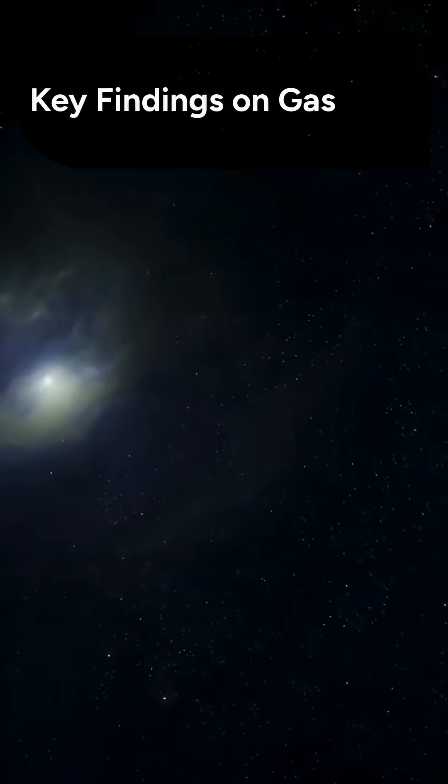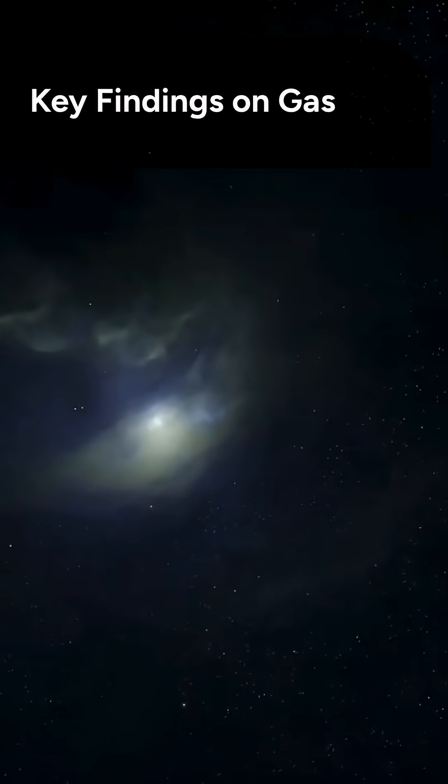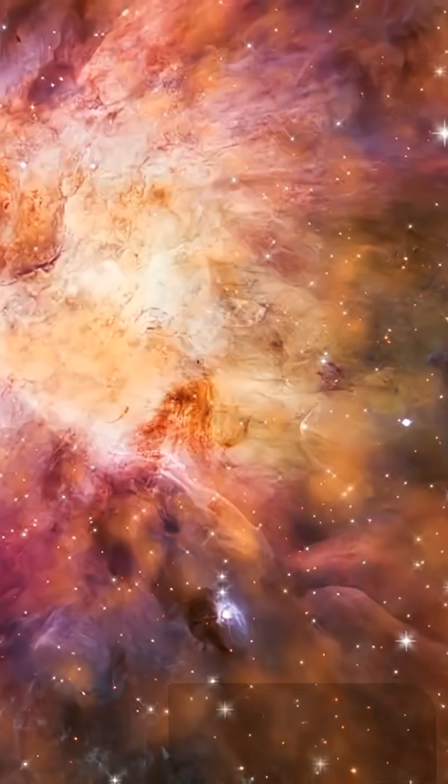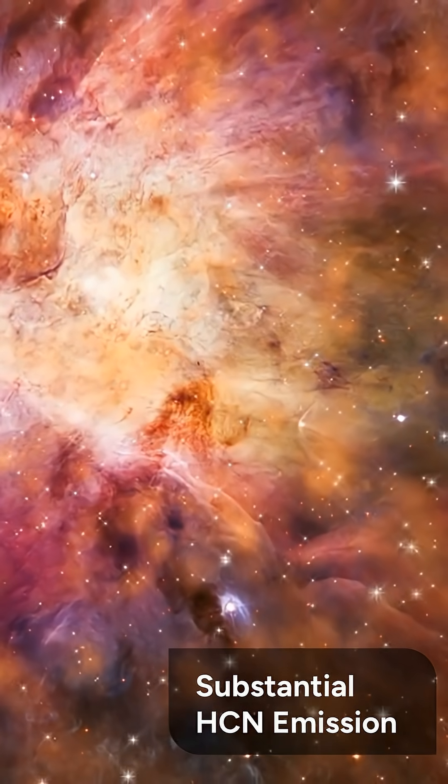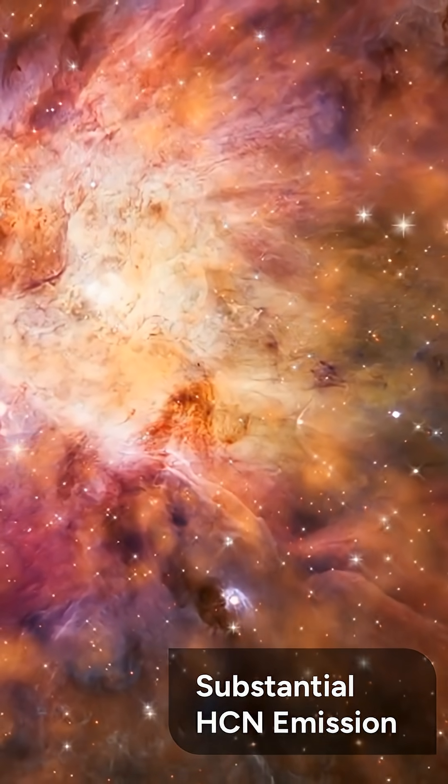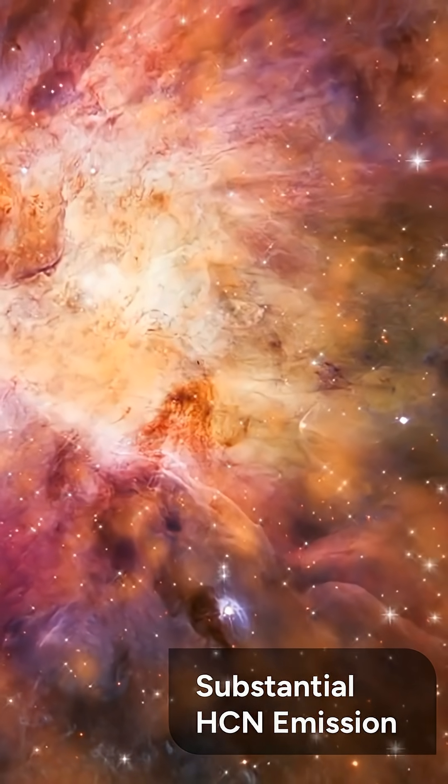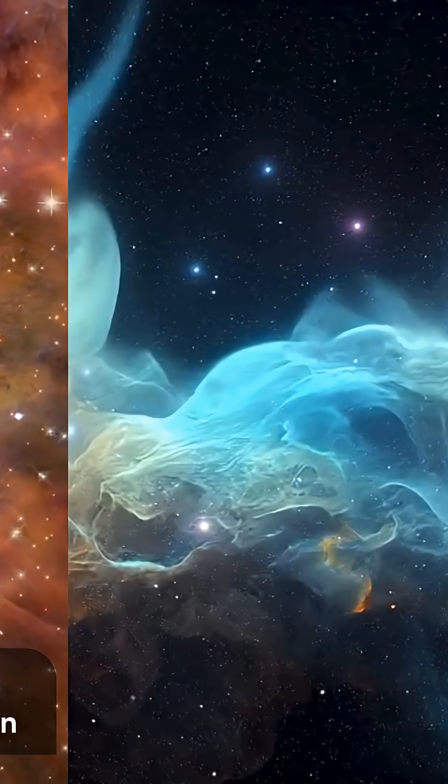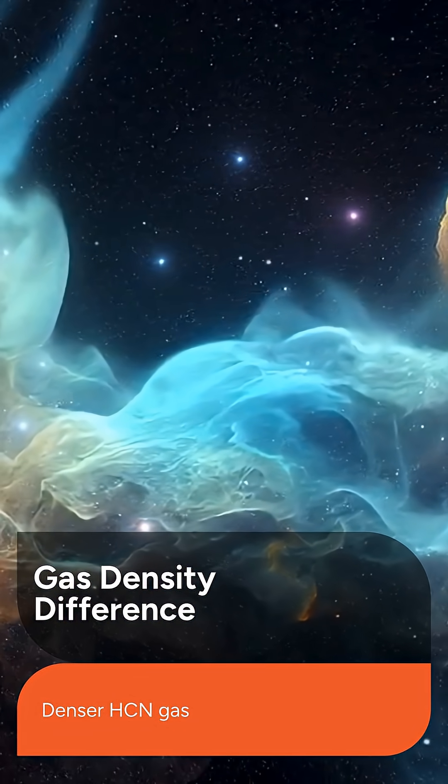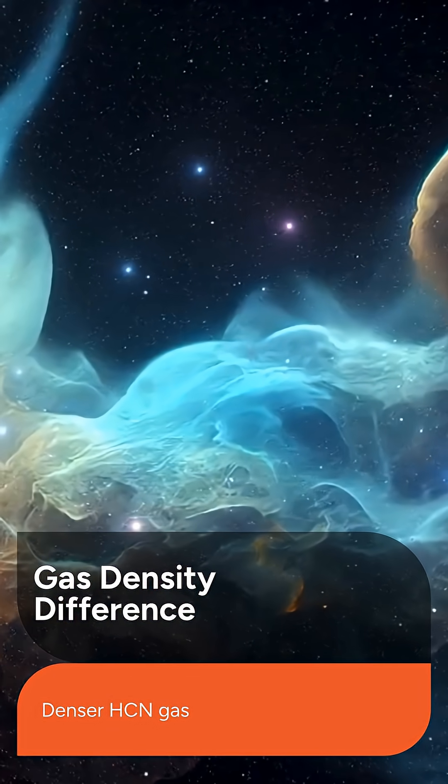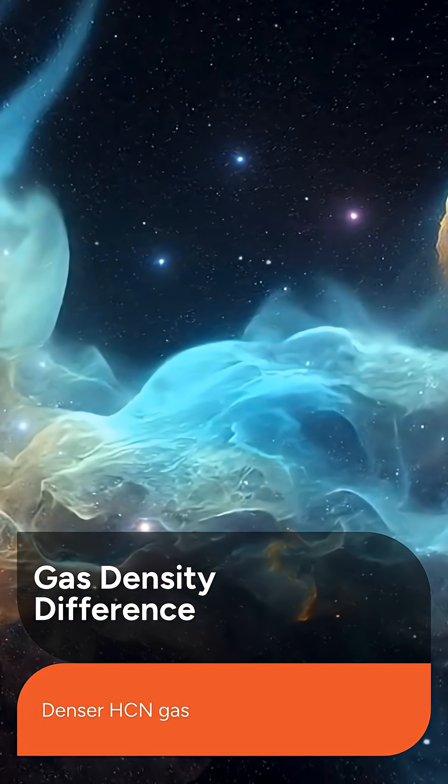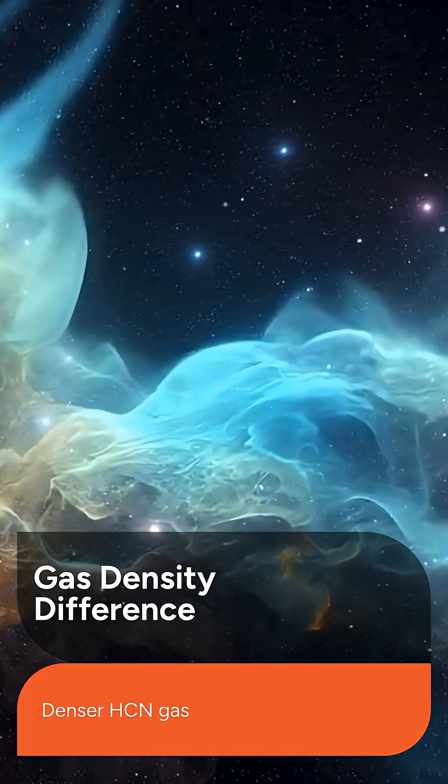The analysis yielded significant findings about the composition and density of the gas in the outflow. They detected substantial HCN emission, which had an HCN to CO flux ratio consistent with other early-type galaxies. The astronomers concluded that the hydrogen cyanide-emitting gas likely traces a denser phase of the outflow, while the optically thin CO emission traces a warmer, more diffuse gas.